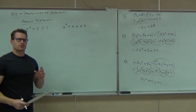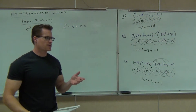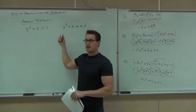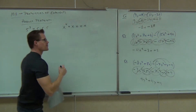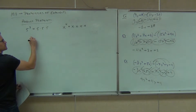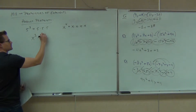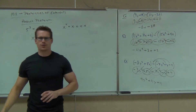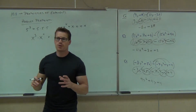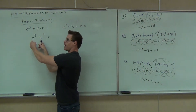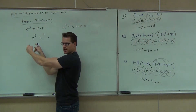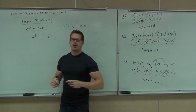Here's where the product property comes into play. What would happen if I wanted to take x to the 3rd times x to the 4th? What's going to happen if I want to multiply items with common bases — x's are the same — but they have exponents? How do I do it?